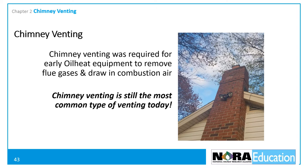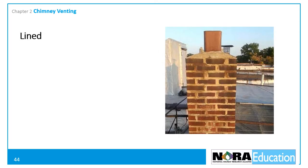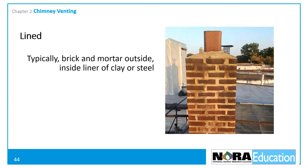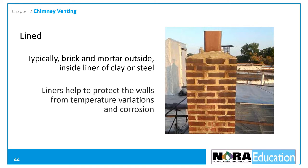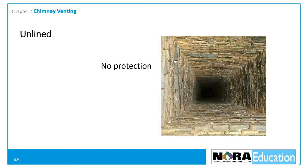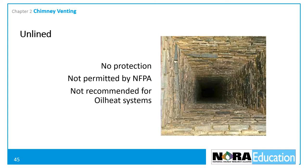Chimneys can be lined or unlined. A lined chimney is typically made of brick and mortar on the outside with an inside liner of clay or stainless steel. The liner protects the chimney walls from temperature variations and corrosion. An unlined chimney provides no means of protection for the chimney walls; they are not permitted under current NFPA regulations and are not recommended for oil heat systems.